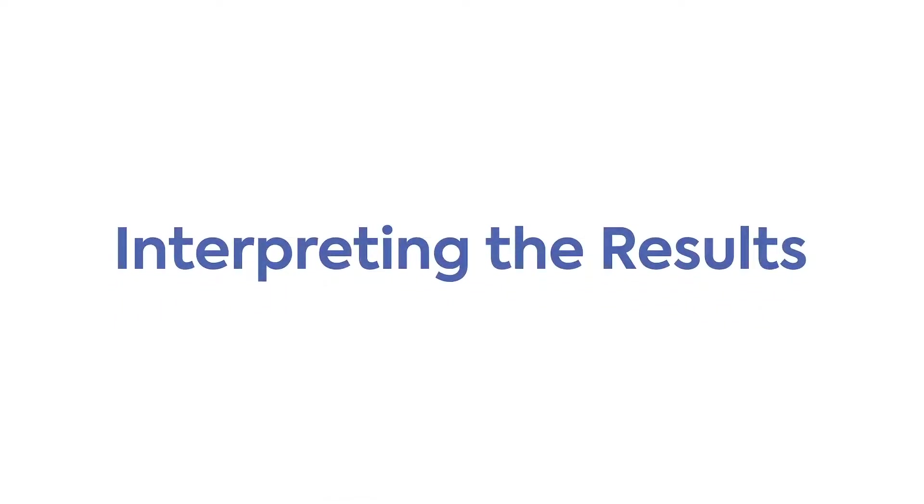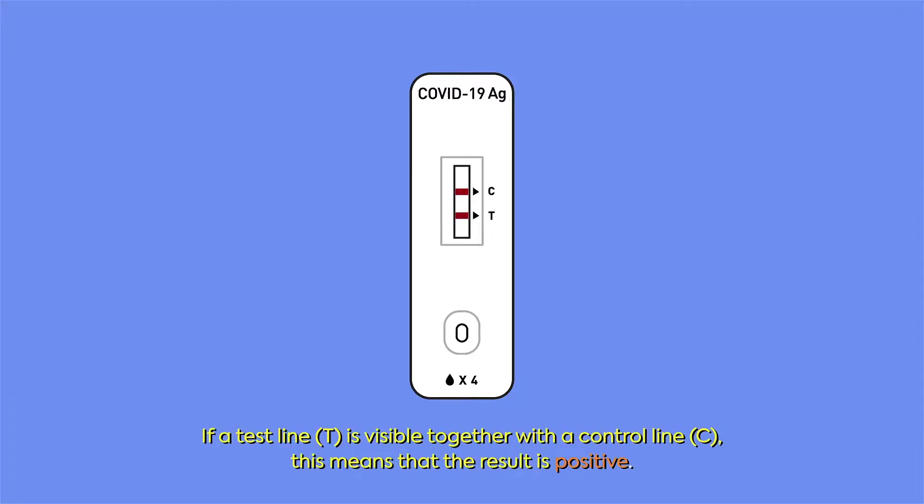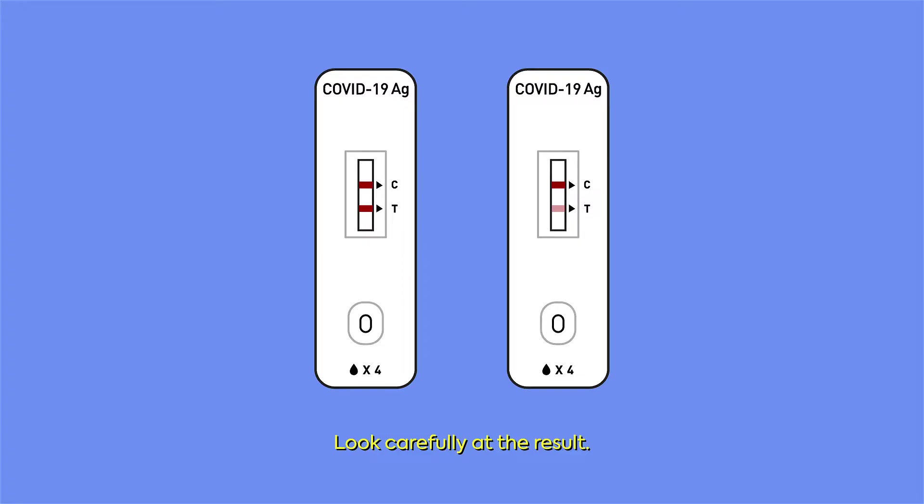Interpreting the results. If a test line T is visible together with a control line C, this means that the result is positive. Look carefully at the result. The test should be considered positive if two lines are visible, even if they are faint.